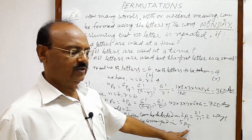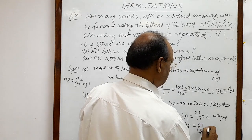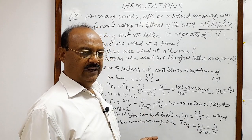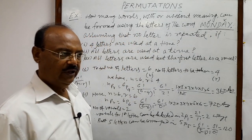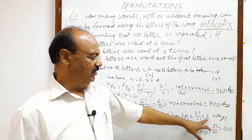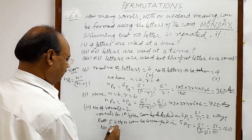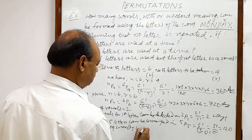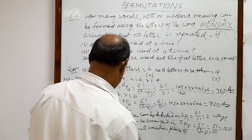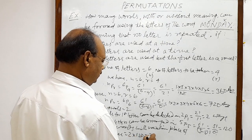With n=5 and r=5, we get 5P5 = 5!/(5−5)! = 5!/0! = 5!/1 = 1×2×3×4×5 = 120. The total number of words with a vowel in the first position is 2×120 = 240.